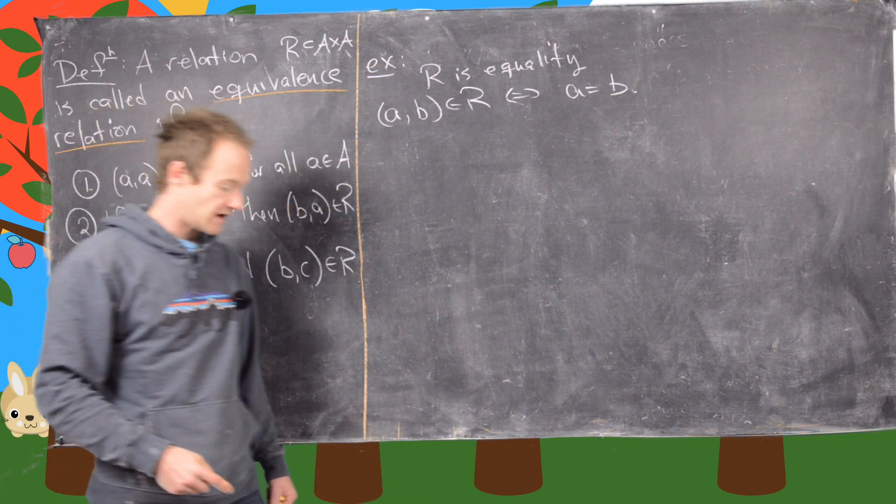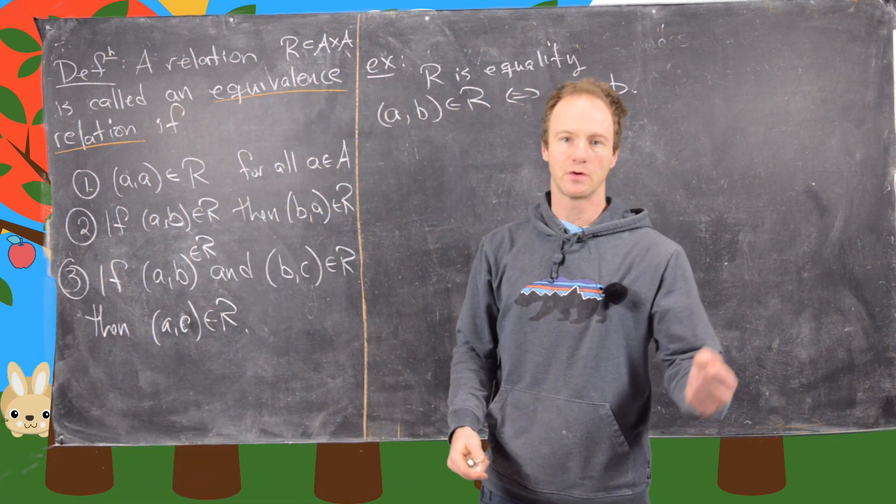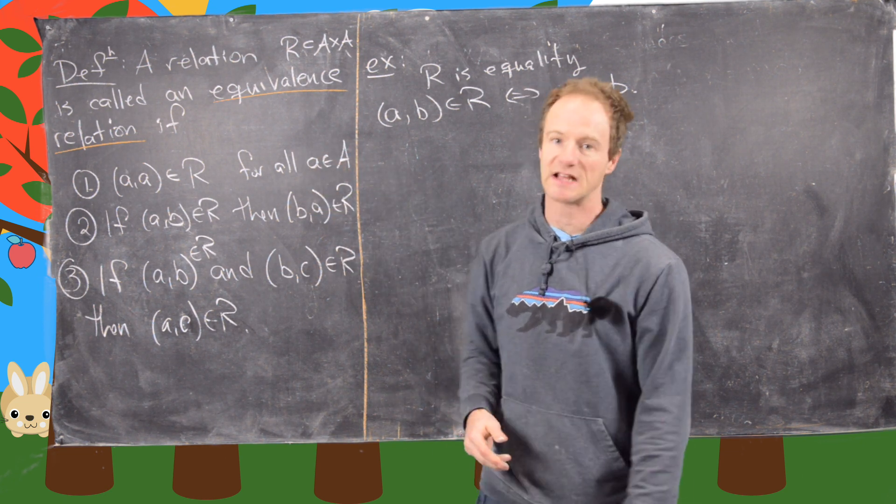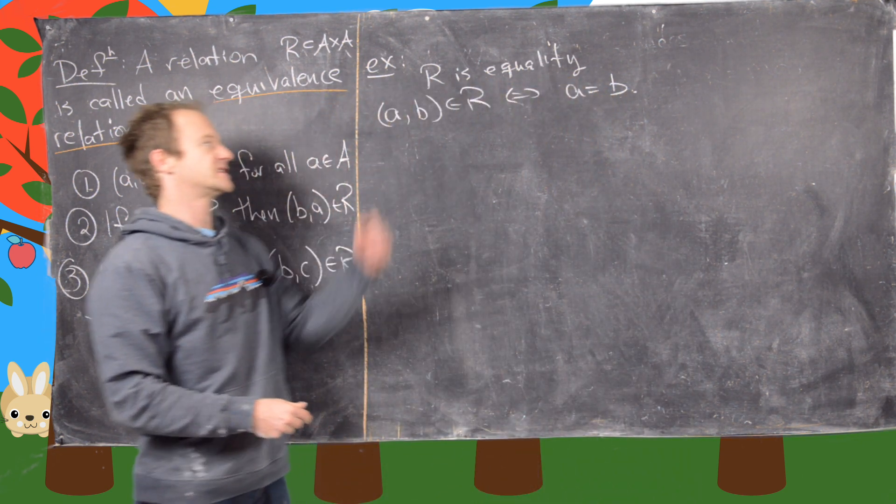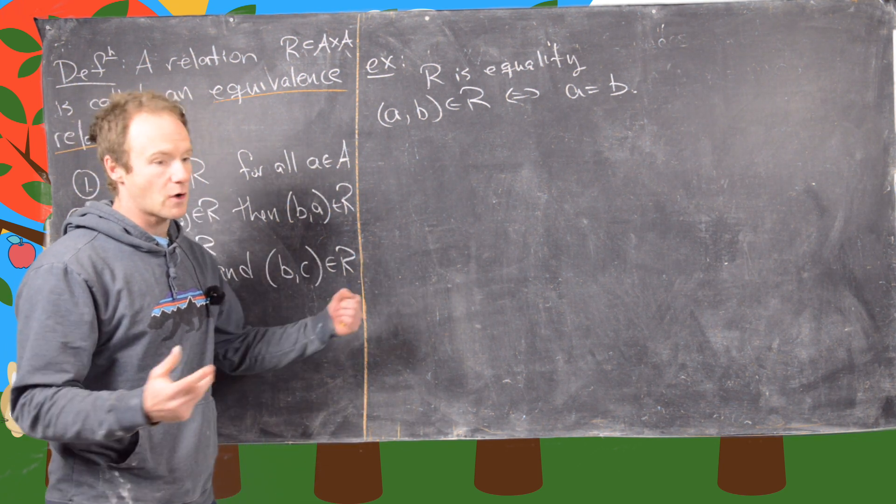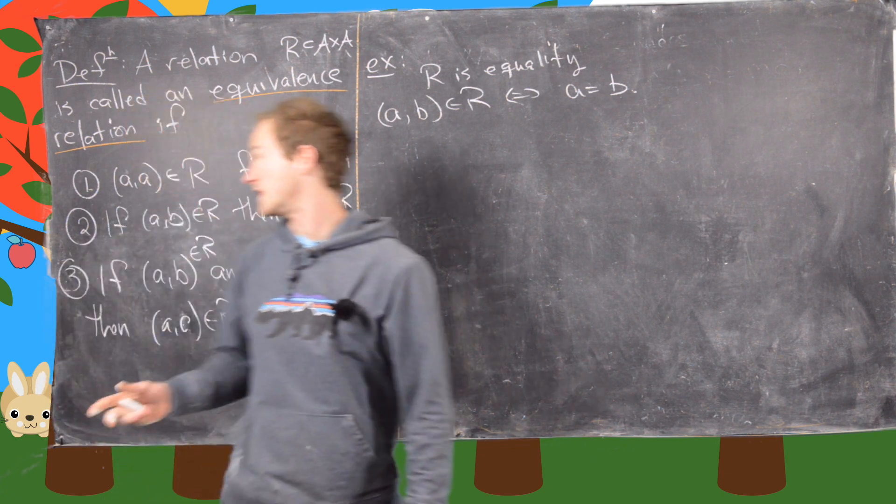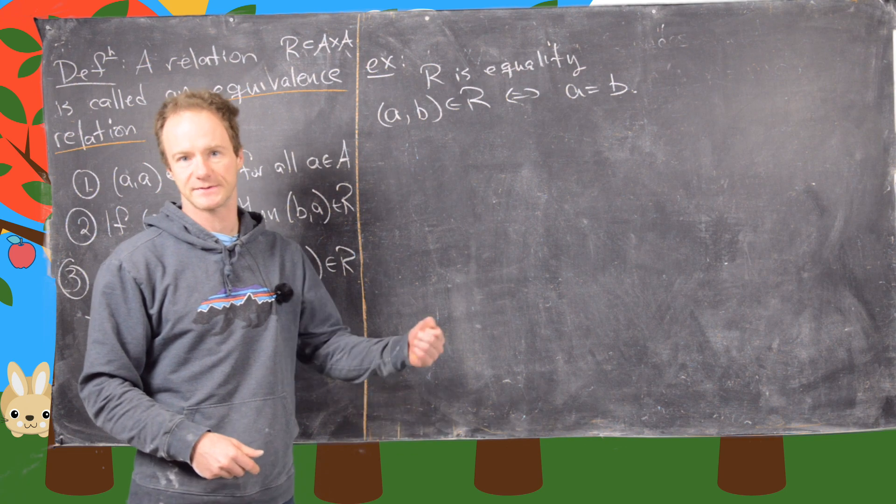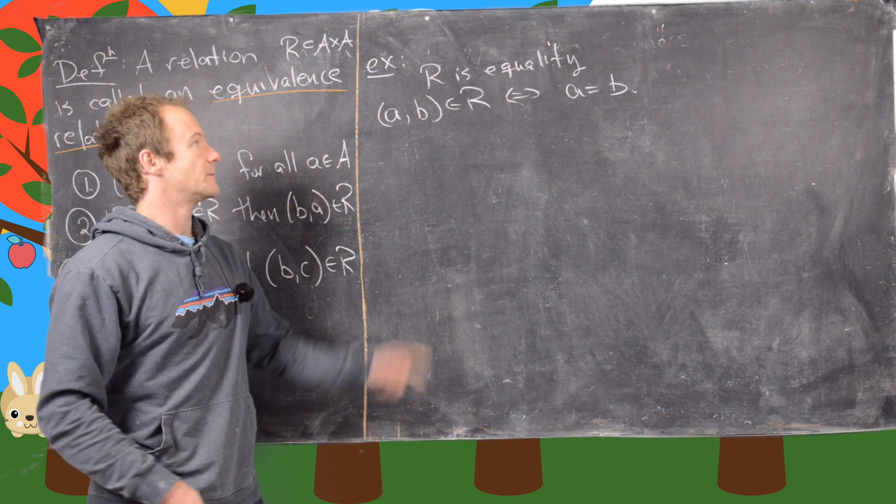Good. And then from the end of elementary school or junior high or something, you will learn that these properties are satisfied by equality. So this is obviously an equivalence relation. And if equality was not an equivalence relation, then maybe this term equivalence relation would be a bad term for this kind of setup. So there's that too. Okay.